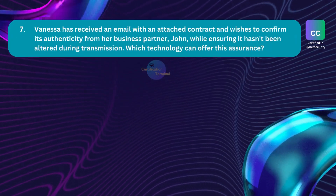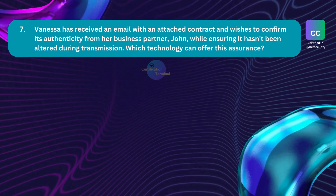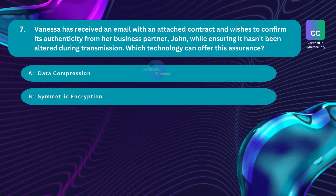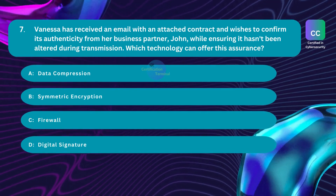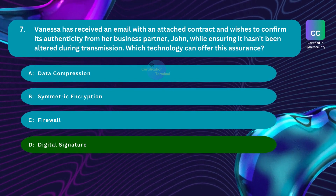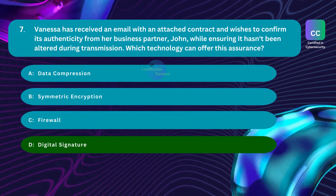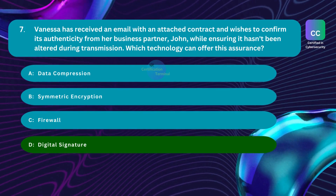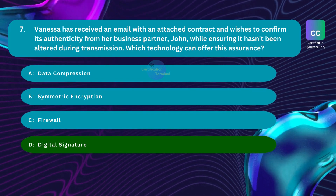Question number 7. Vanessa has received an email with an attached contract and wishes to confirm its authenticity from her business partner John, while ensuring it hasn't been altered during transmission. Which technology can offer this assurance? Option A: data compression. Option B: symmetric encryption. Option C: firewall. Option D: digital signature. The correct answer is Option D, digital signature. Digital signatures are cryptographic tools used to verify the identity of the sender and ensure the integrity of the transmitted data. If John applied a digital signature to the contract, Vanessa could verify it to confirm the contract was from John and hadn't been altered in transit.